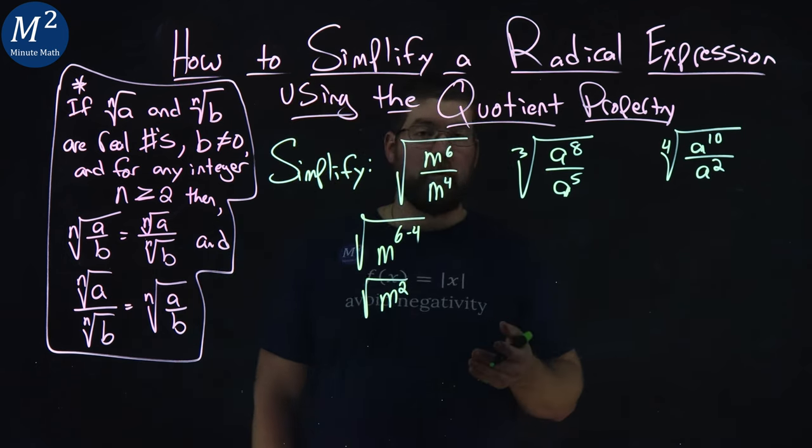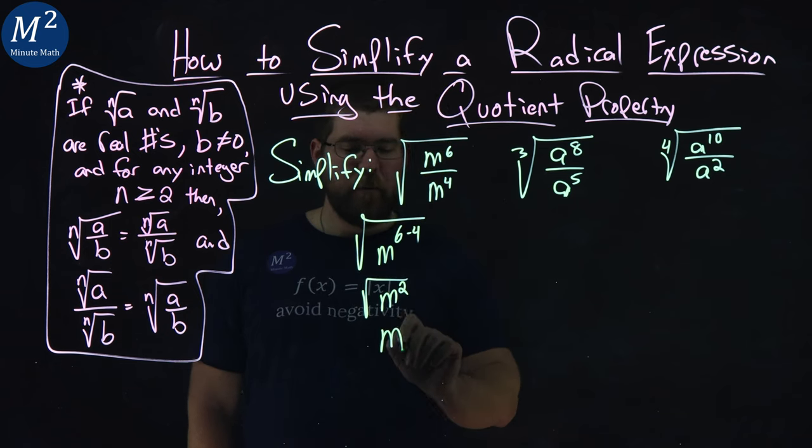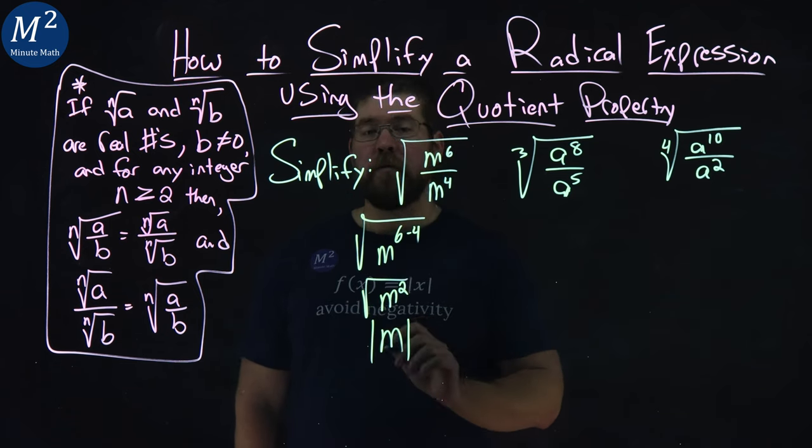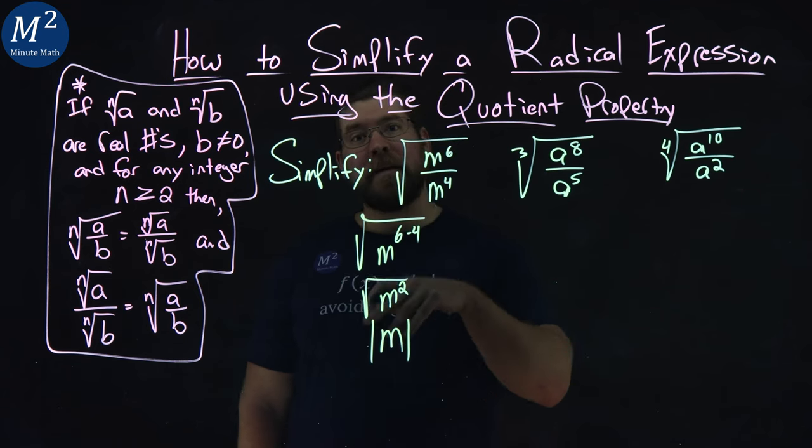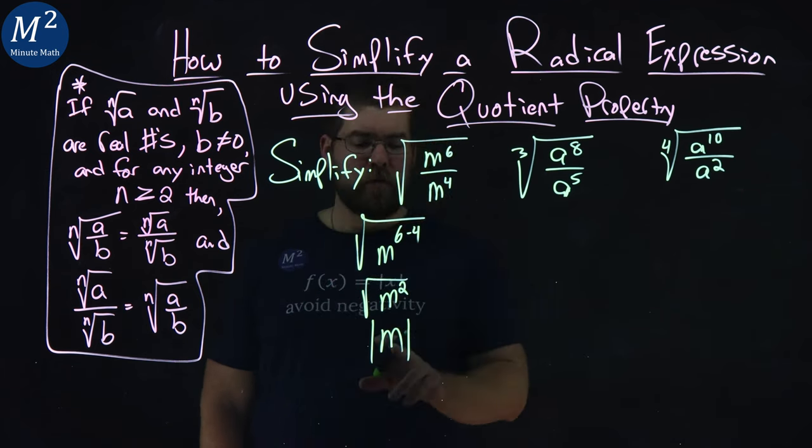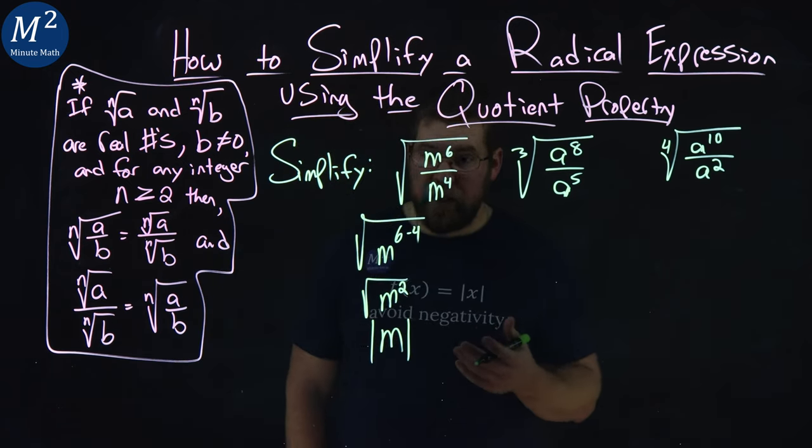Lastly, square root of m squared is just m, but we have to be careful. We have to put absolute values over it. When we have a variable squared and then we take the square root of it, we're left with a variable, but we know that number cannot be negative.